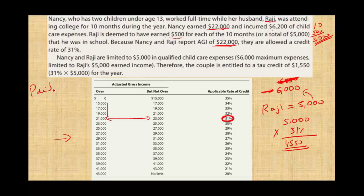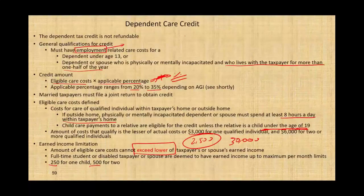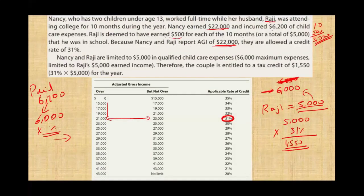To recap: they paid $6,200. Generally for two children the maximum is $6,000, but since Raji is only deemed to earn $5,000, the eligible care costs cannot exceed the lower earner's income. So we use $5,000 times 31%. If Raji had earned $6,000 or more, they would take $6,000 times 31% as their credit.